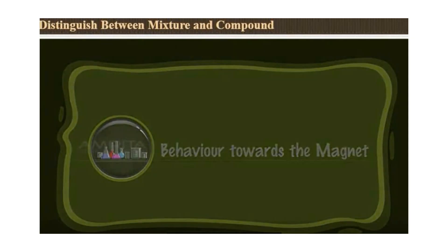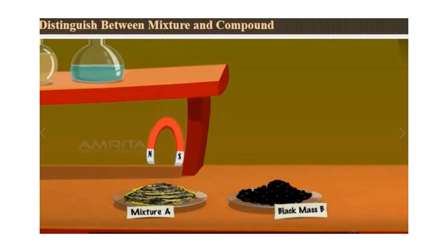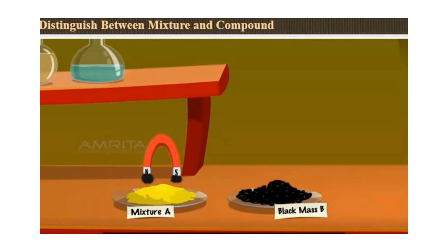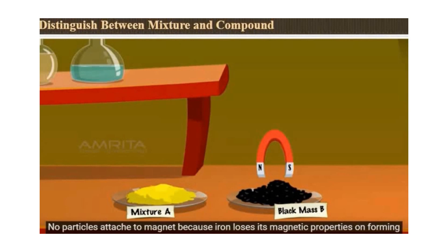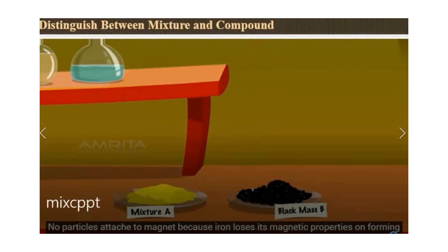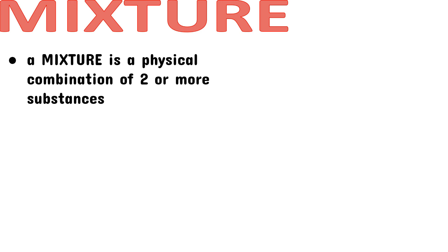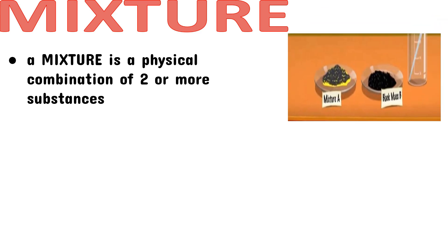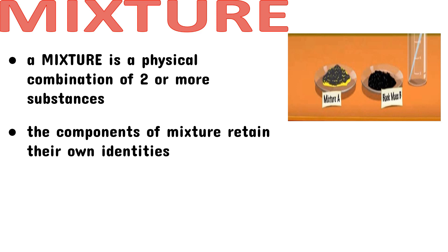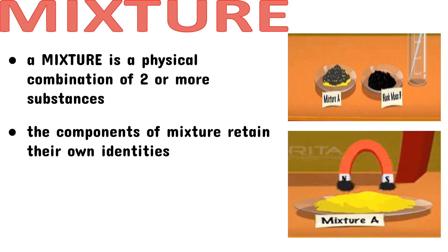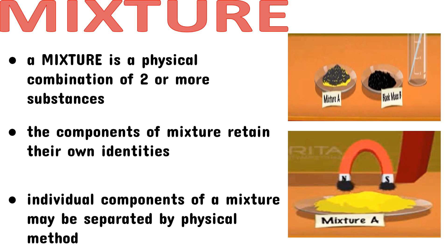Now let us find out how the two behave toward the magnet. If we hold a magnet over Mixture A, the iron filings attach to the magnet because the iron retains its properties. While on Black Mass B, no particles of iron attach to the magnet because the iron lost its magnetic properties. From the experiment: a mixture is a physical combination of two or more substances; the components of a mixture retain their own identities; and the individual components of a mixture can be separated by a physical method — using a magnet, we were able to separate iron filings from sulfur.